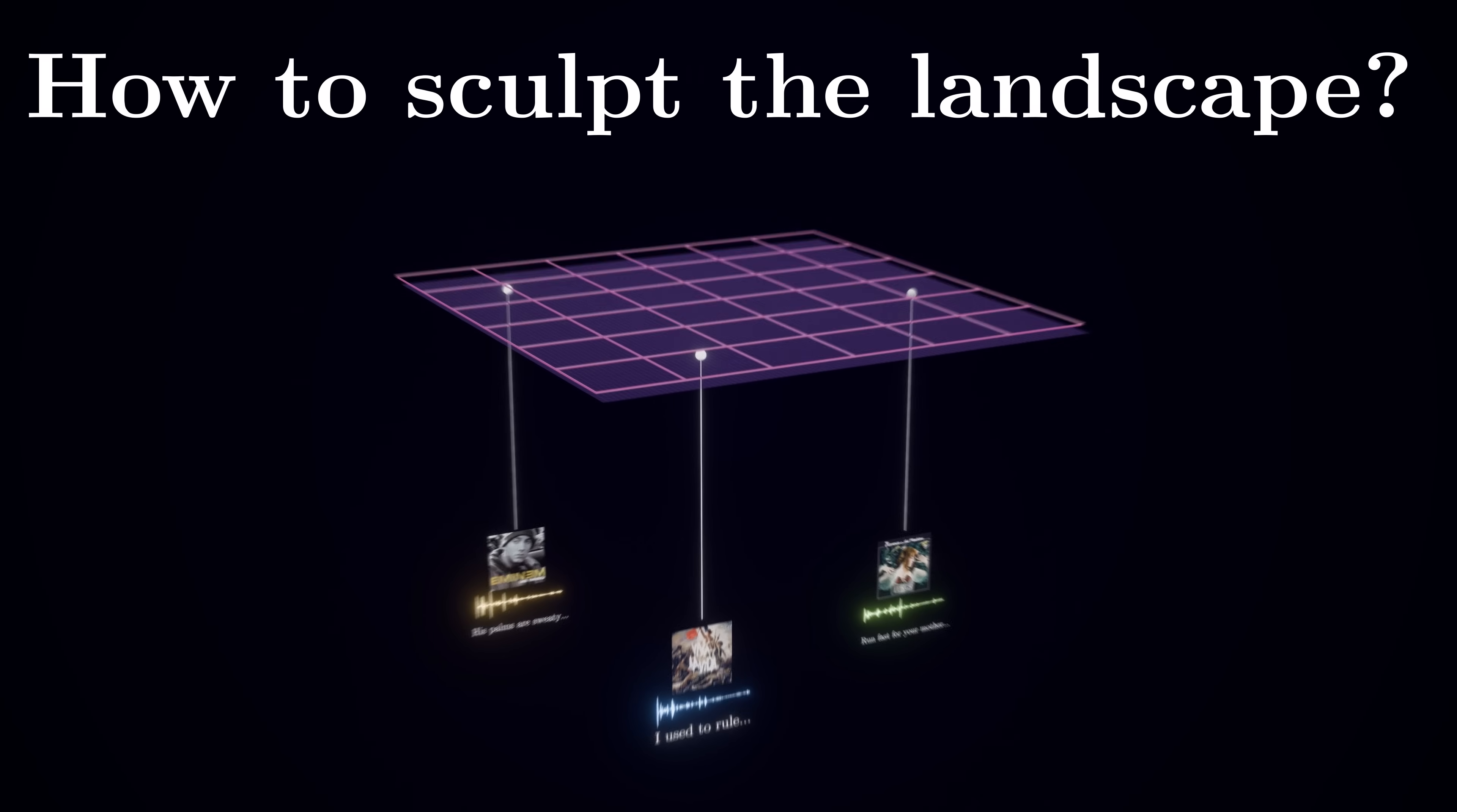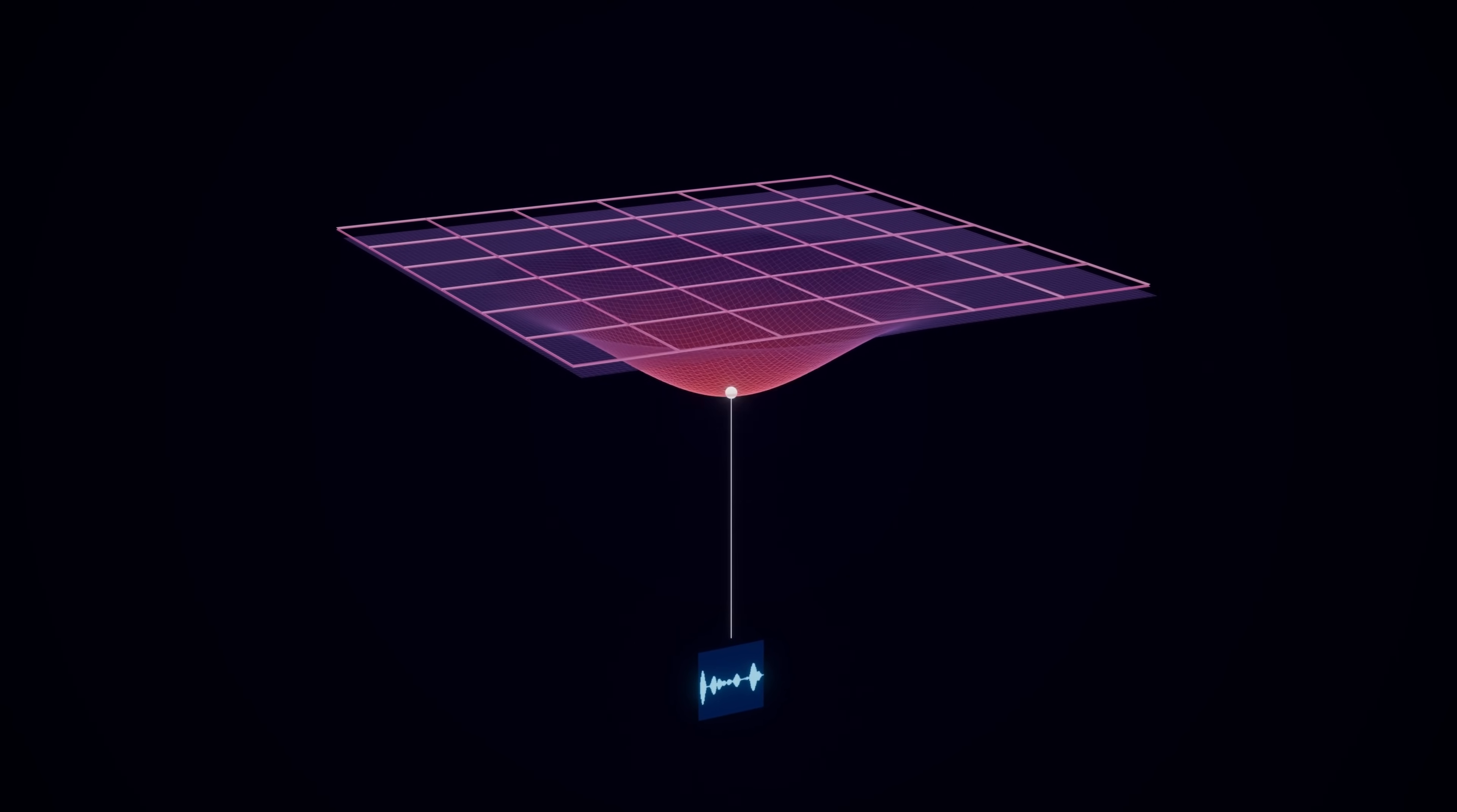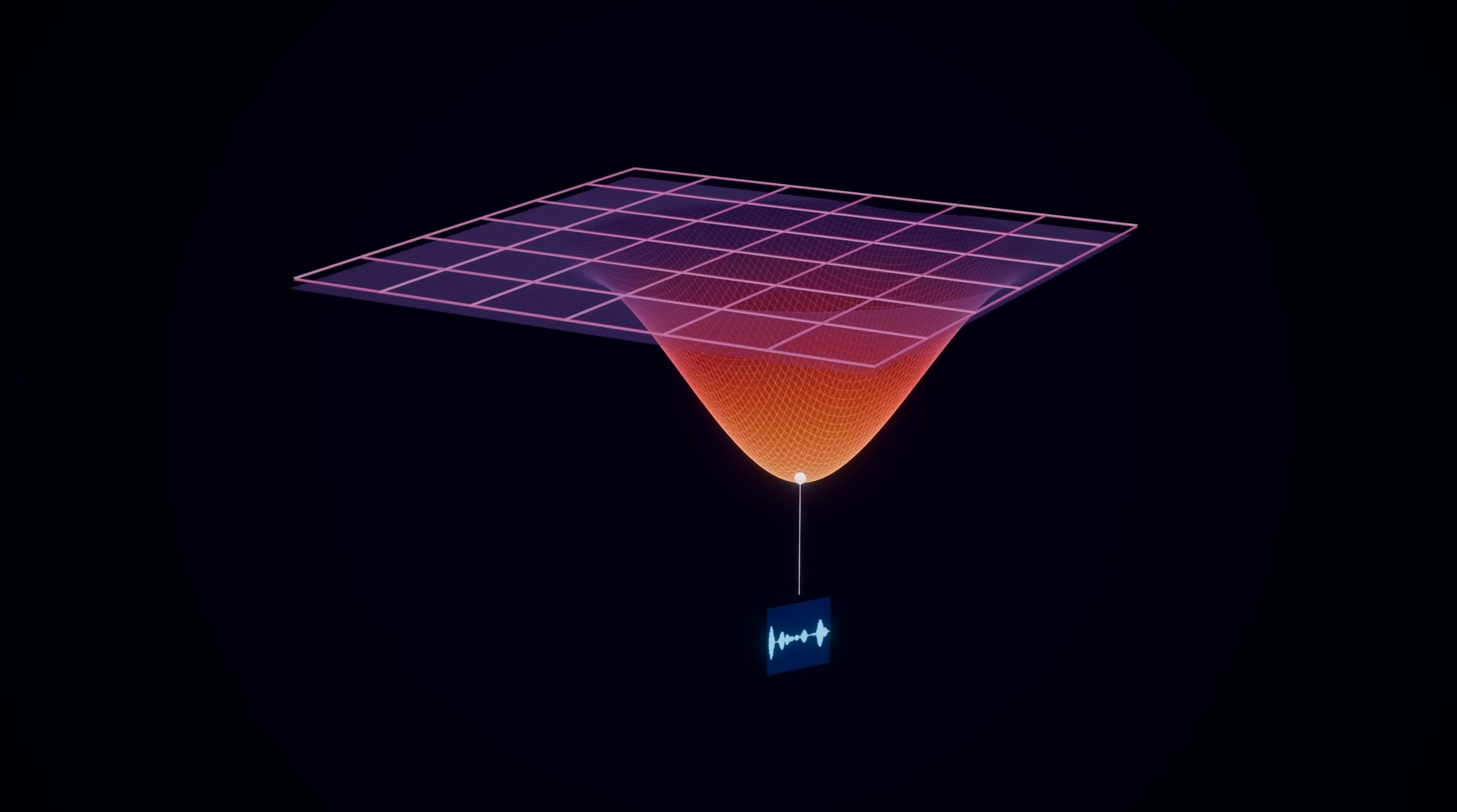But so far we haven't talked about how we come up with the set of connection weights that encode specific memories in the first place. So let's explore the learning process. Before we move to storing several memories, let's consider memorizing a single pattern of states. That means the network would have a single global minimum, one energy well, and would converge to the same pattern every time no matter where you initialize it. While it has little practical use, it provides a nice starting point to describe the learning procedure.